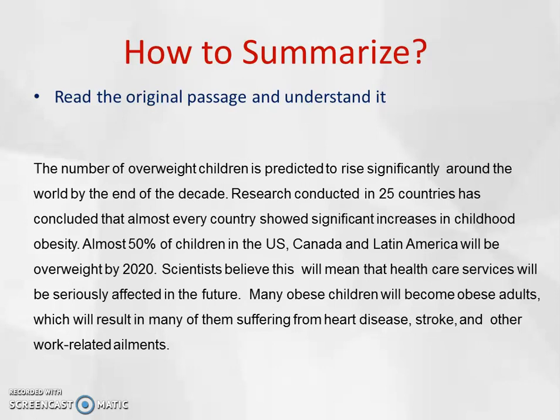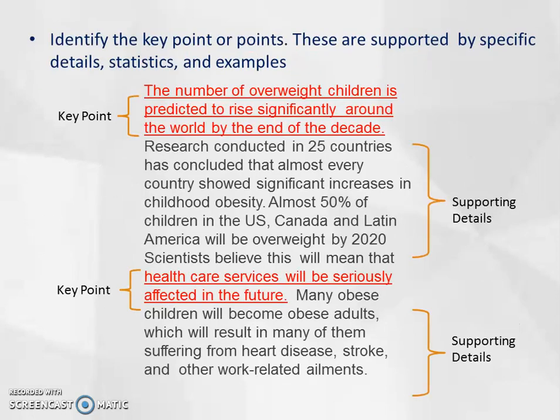After you have read the passage and understood it, try to get the main idea. Then identify the key points or main ideas and also the supporting details, for example the statistics and examples given. We have identified two key points: the first is that the number of overweight children is predicted to rise significantly around the world by the end of the decade, and the second is that healthcare services will be seriously affected in the future. These are the two key points, and the rest are supporting details which you will not use in your summary.